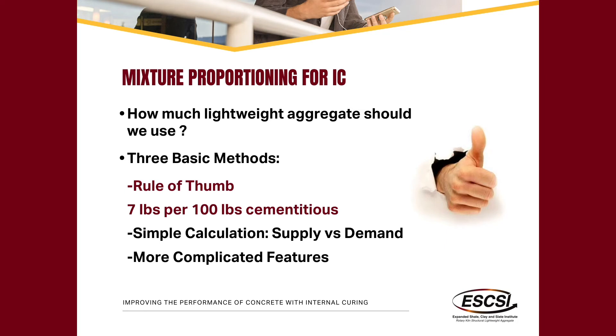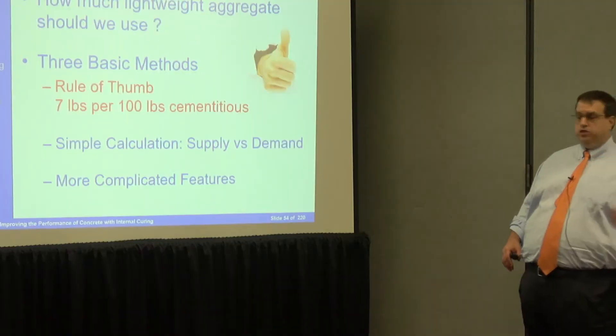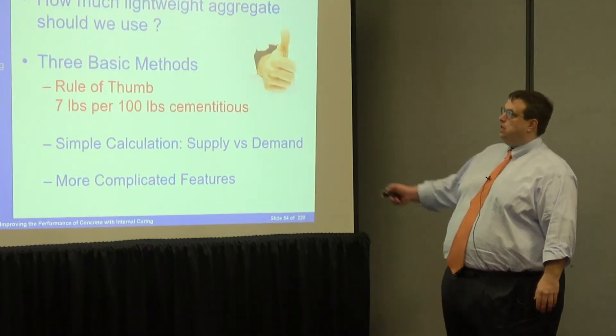The rule of thumb is seven pounds per every 100 weight. The next question is whether to use cement or total cementitious — the answer is: it depends. If you only have cement, use all of it. If you have cement plus slag, slag has higher chemical shrinkage but less slag reacts than cement, so they balance out. The same applies to fly ash and silica fume — silica fume has the highest chemical shrinkage but the lowest reactivity and is used in very low volumes.